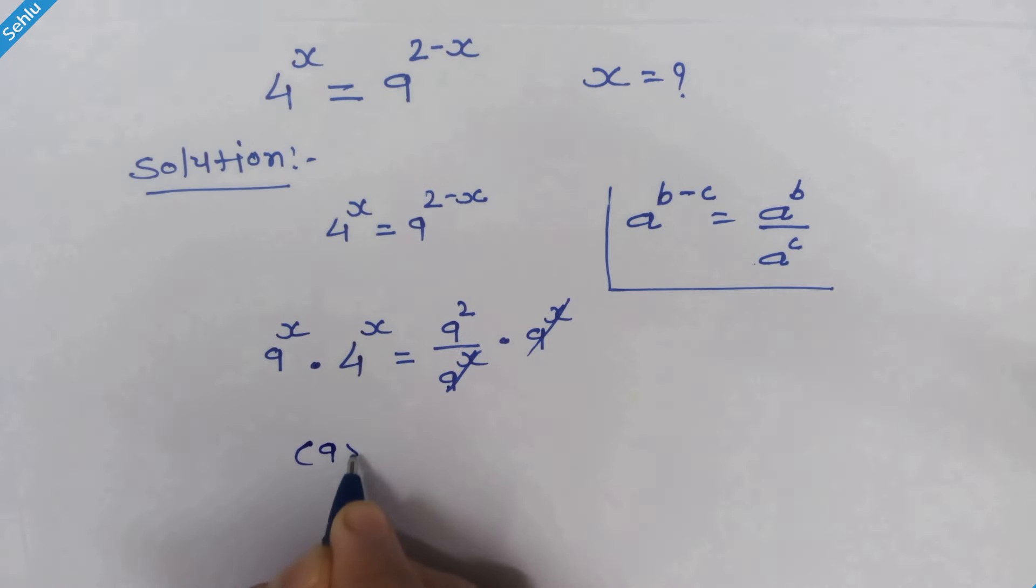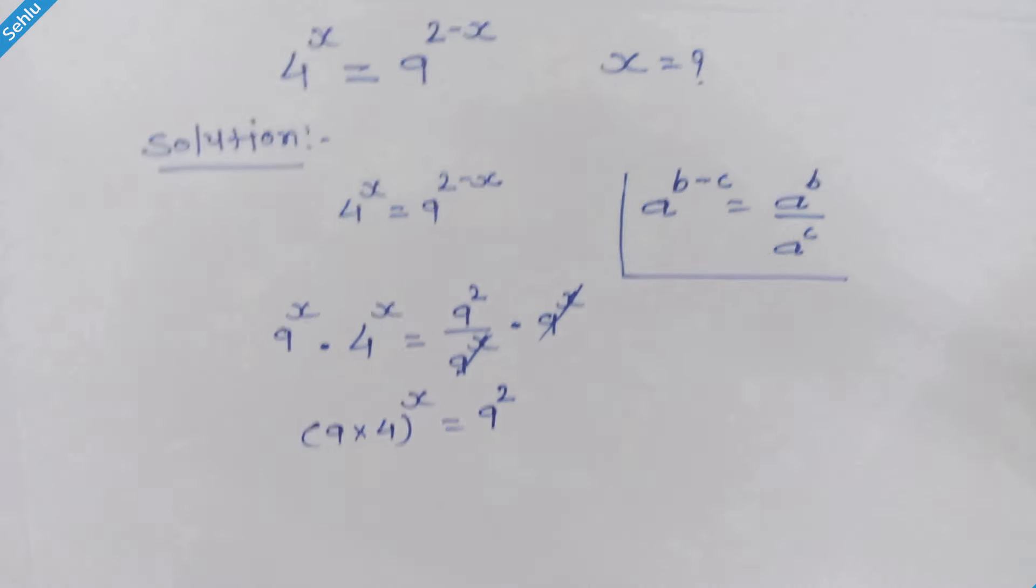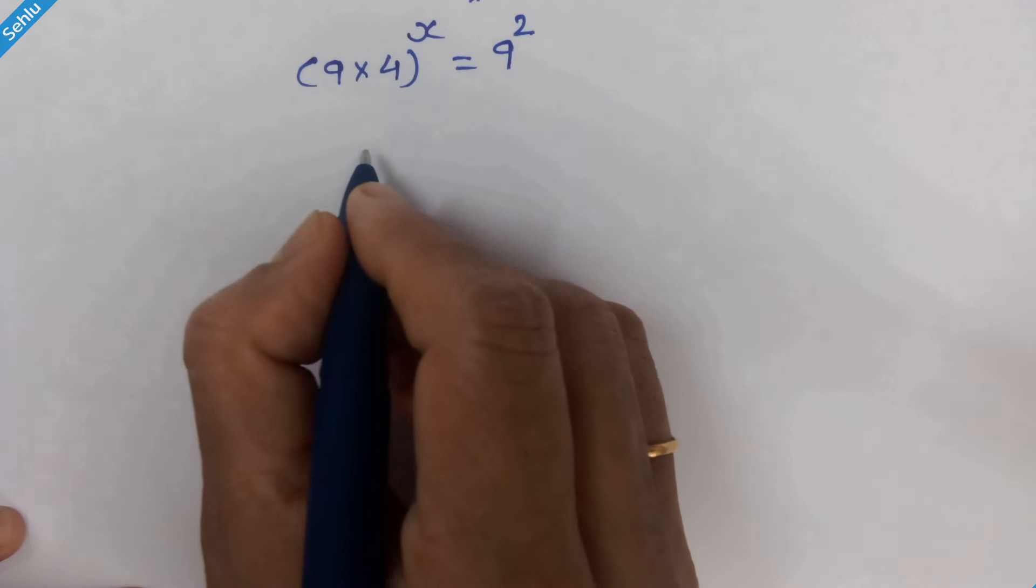So we have 9 times 4, whole raised to x, equals 9 squared. 9 times 4 is 36.